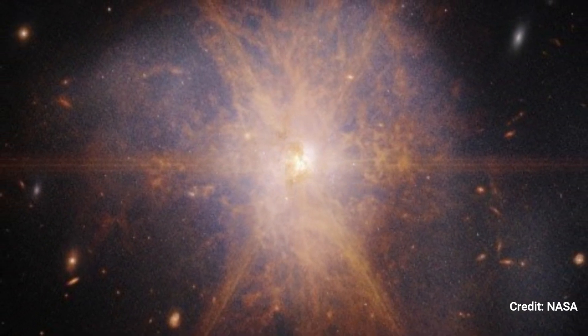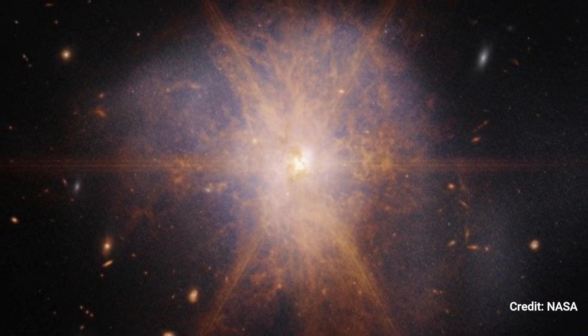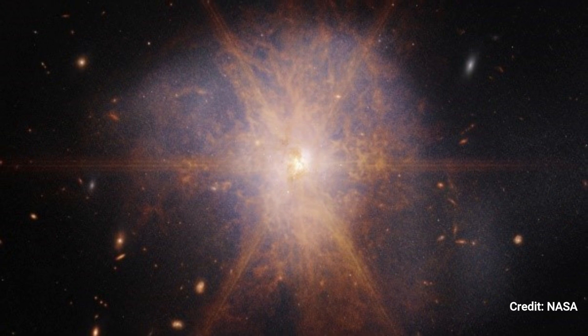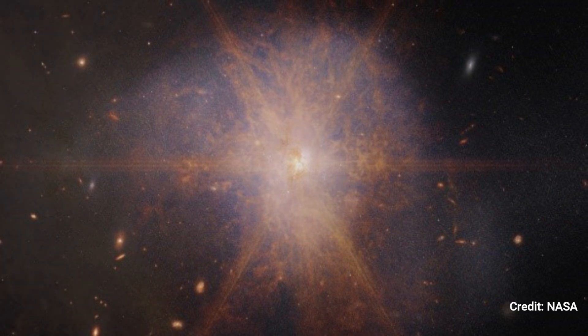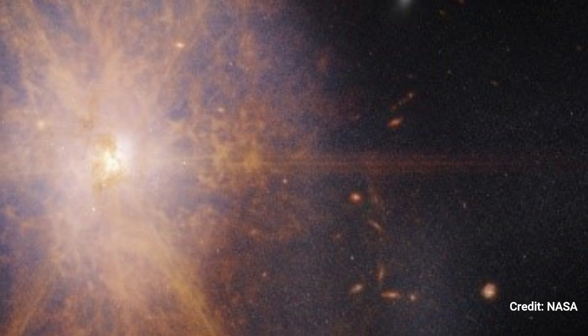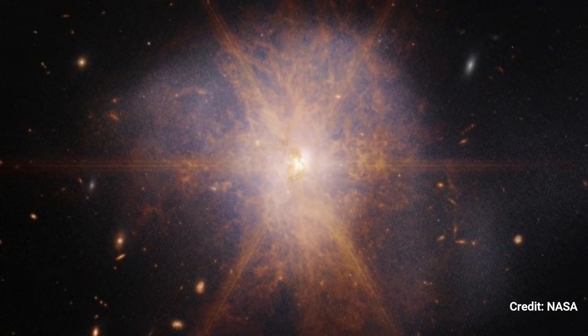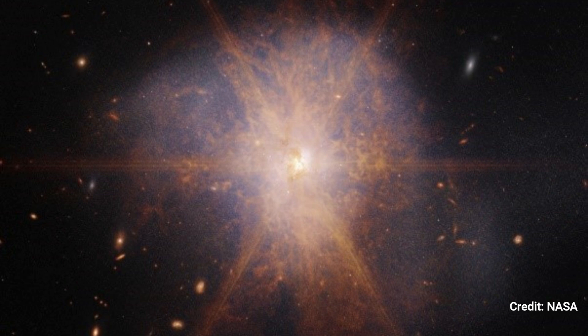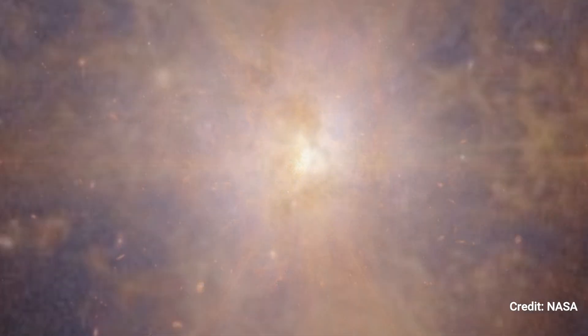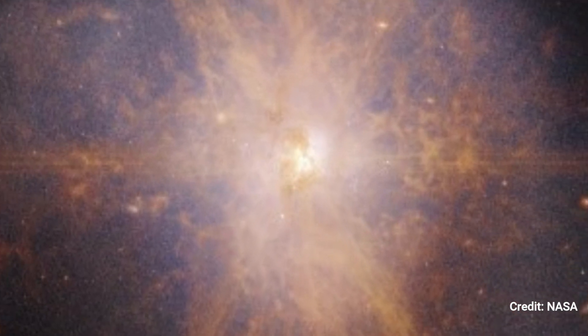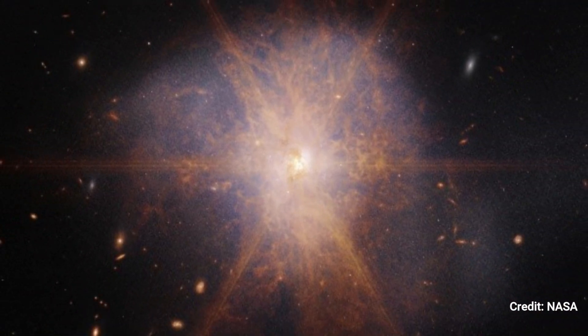It is the closest ULIRG to Earth and the brightest of the three galactic mergers. The two spiral galaxies collided roughly 700 million years ago. It triggered a massive explosion of star creation. Around 200 massive star clusters live in a dense, dusty area 5,000 light-years wide, approximately 5% of the Milky Way's width. This little area has the same amount of gas as the entire Milky Way galaxy.